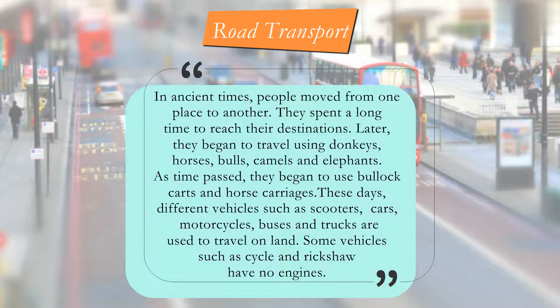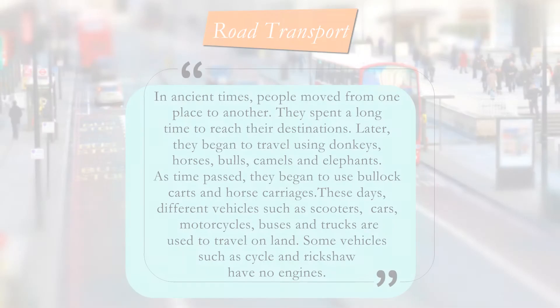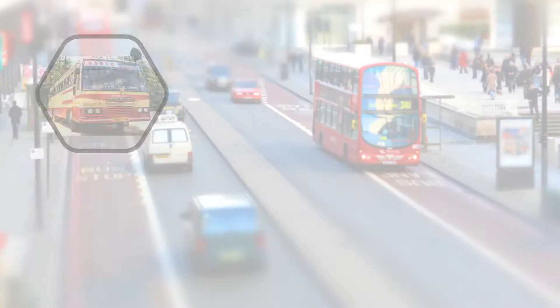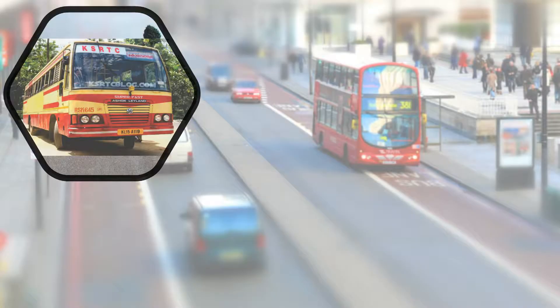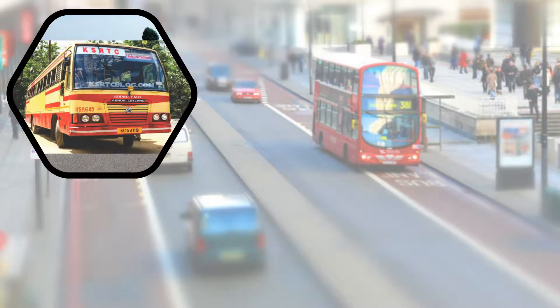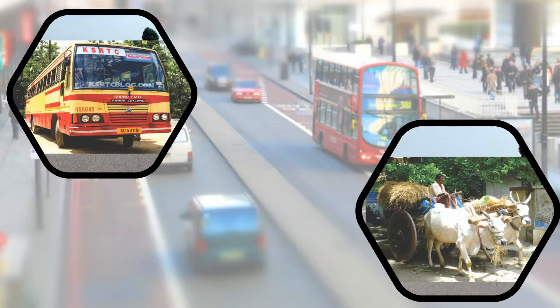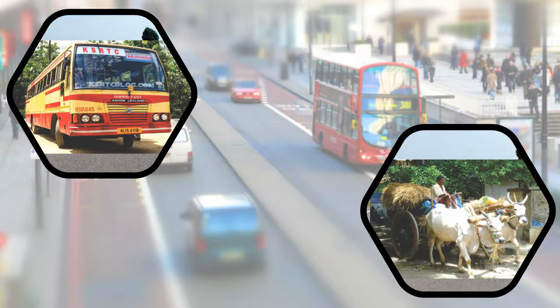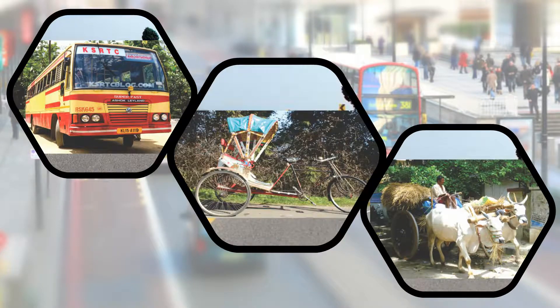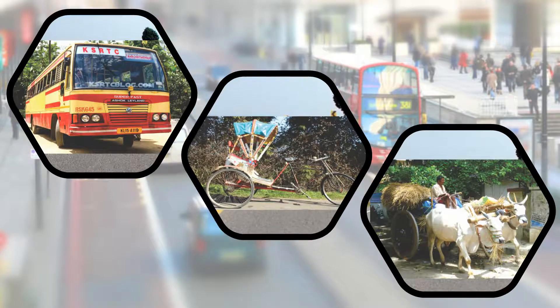As time passed, they began to use bull carts and horse carriages. These days, different vehicles such as scooters, cars, motorcycles, buses and trucks are used to travel on land. Some vehicles such as cycle and rickshaw have no engines.